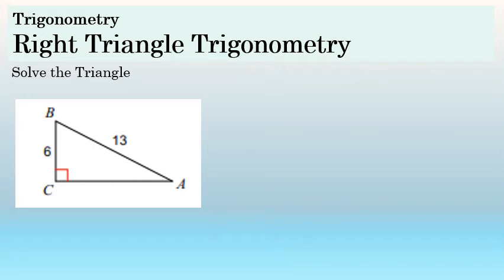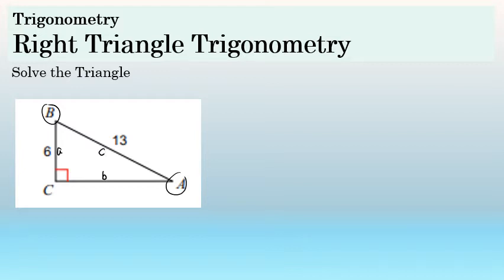This is a right triangle trigonometry problem where I'm being asked to solve the triangle — to find the measures of all of the missing angles and the lengths of all the missing sides. In this problem, I'm missing angle A and angle B. I've been given that angle C is 90 degrees. Side A, the side across from angle A, is 6. Side B, across from angle B, is missing. And side C, the hypotenuse across from angle C, is given as 13.